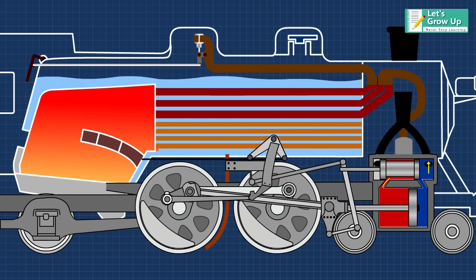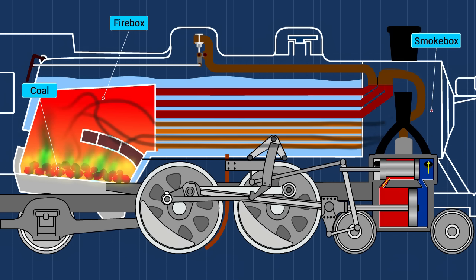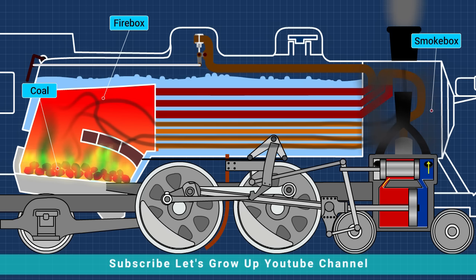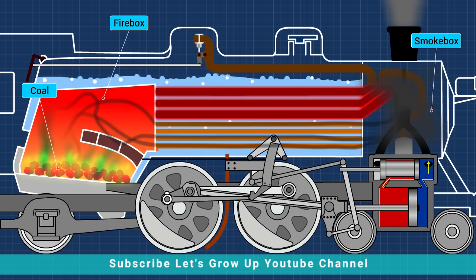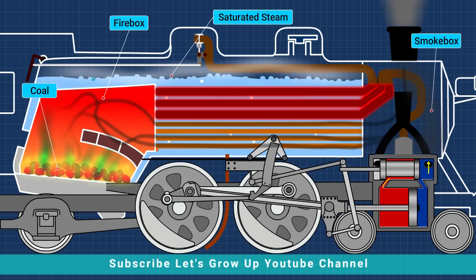Let's learn the working function of the steam locomotive engine. The coal is burned on the grate inside the fire box. The hot gases are drawn through long tubes in the boiler to the smoke box, and then out of the locomotive from the chimney. The heat from the firebox heats up the water in the boiler. Water is also heated by the heat from the hot gases going through the long tubes. As water becomes hotter, it turns into saturated steam which collects above the water.